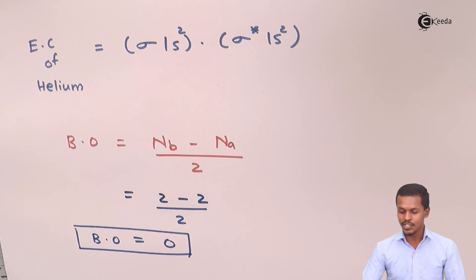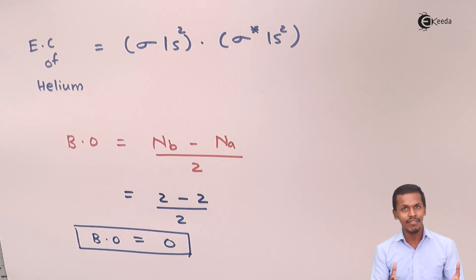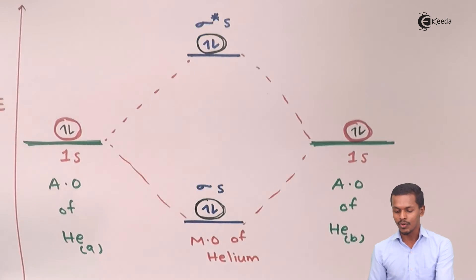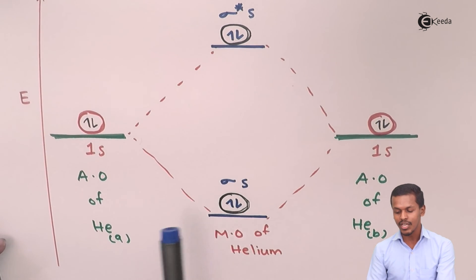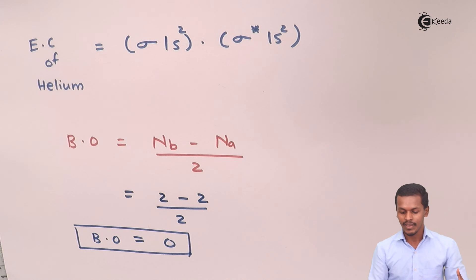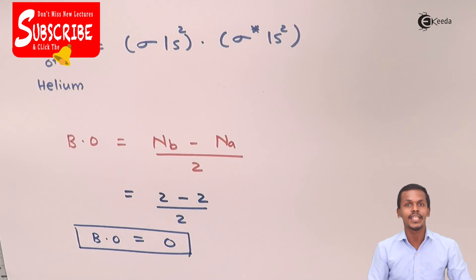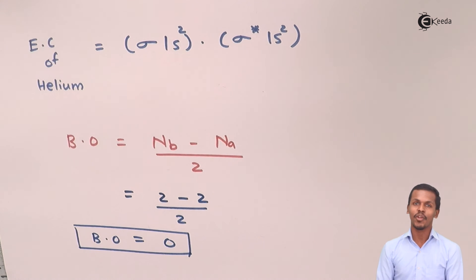We could already estimate this using valence bond theory or hybridization, but the molecular orbital diagram provides important additional insight: MOT plays a vital role in understanding energy levels when an electron is excited — at what energy level it would be, and whether it occupies a bonding or anti-bonding orbital. There are various details that we can get from the molecular orbital diagram.